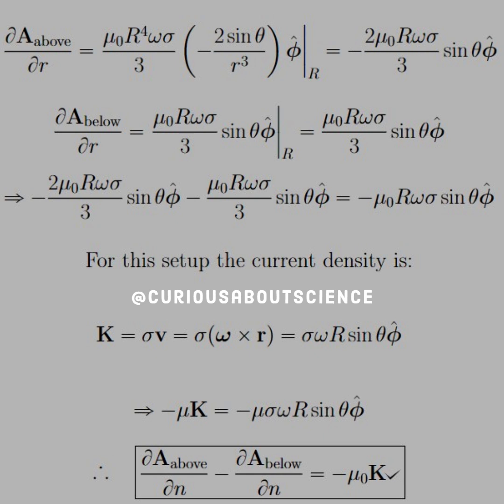When we take their difference, we end up with negative mu naught R omega sigma sine theta phi-hat. For the setup, the current density is K equals sigma v, where v is the cross product of omega with r. Therefore, we end up with K equals sigma omega R sine theta in the phi-hat direction.